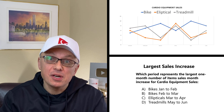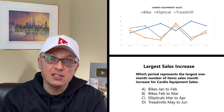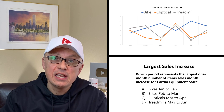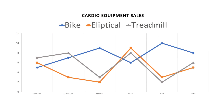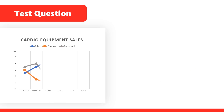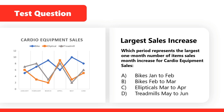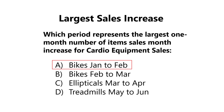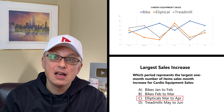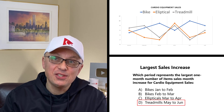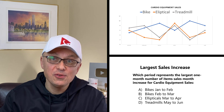A lot of times you might get a question asking you to determine a sales increase from a graph. In this case, we have a chart showing sales of cardio equipment from January to June: bike sales (blue line), elliptical sales (orange line), and treadmill sales (gray line). The question asks: which period represents the largest one-month number of item sales increase for cardio equipment? Choices: A) bikes January to February, B) bikes February to March, C) ellipticals March to April, D) treadmills May to June.